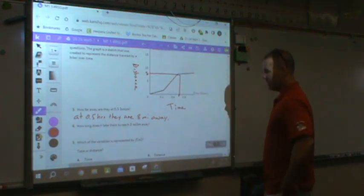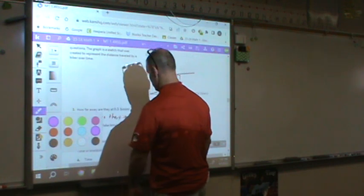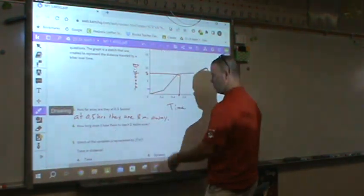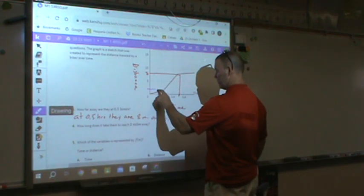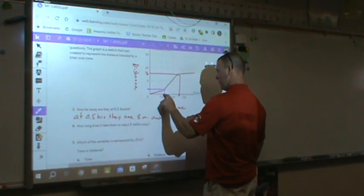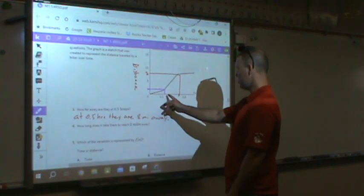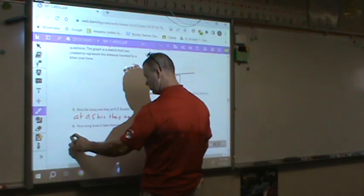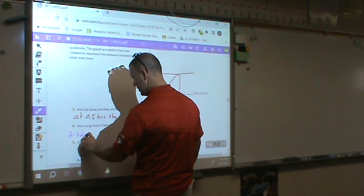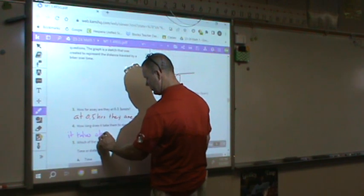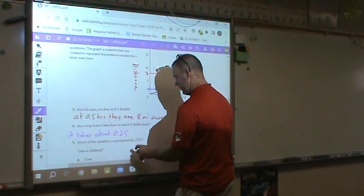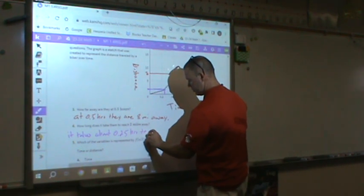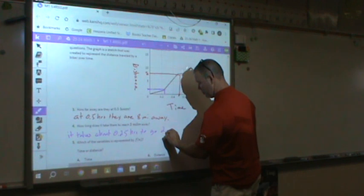Make sure you answer complete sentences. How long does it take them to reach two miles? Well, time, miles. Here's two miles. So, I'm just going to work backwards. I'm going to come across to my line and down. Now, notice it's just past 0.2, not quite in the middle. It takes about 0.25 hours to go two miles.